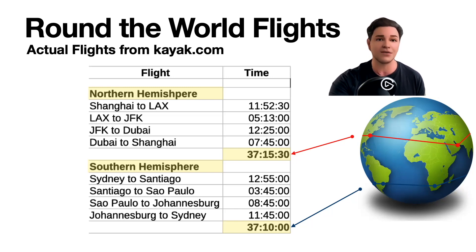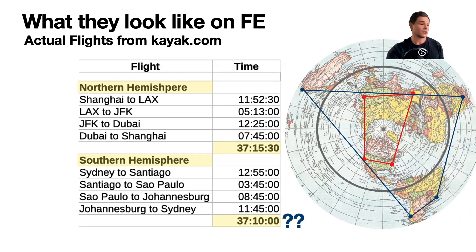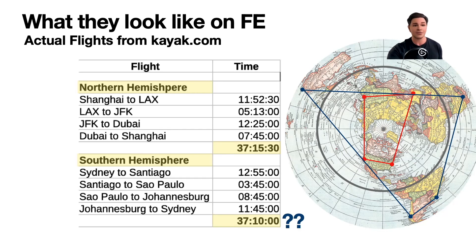Super easy to prove on a spherical Earth using actual international flights on kayak.com. So what would these flights look like on a flat Earth? The short answer is comical. On the flat Earth model, the red and blue round-the-world flights are shown, and clearly the Southern Hemisphere flights would be longer and would take longer — there are more miles and more time on a flat Earth. But these are actual cities, actual flights, actual points. The Northern Hemisphere took 37 hours and the Southern Hemisphere also took 37 hours — how is that possible on a flat Earth? The Southern Hemisphere flight should be at least two or three times longer.